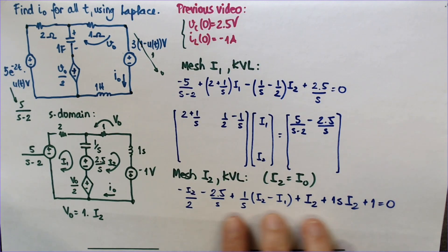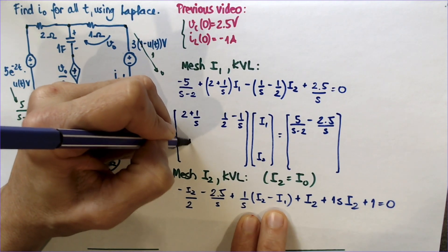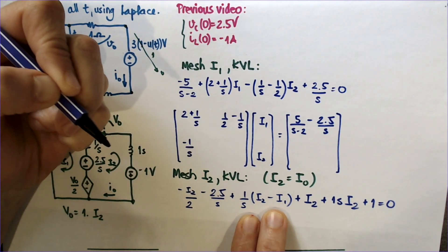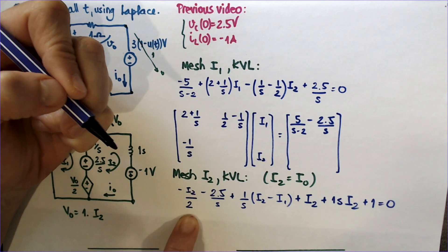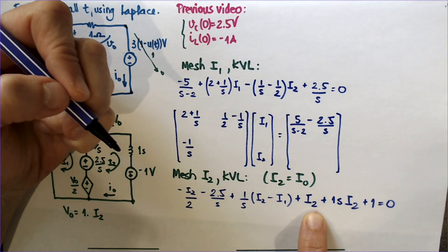Now really, I'm going to get all the I1's out, which are minus 1 over s. And then all the I2's out, which are minus half, plus 1 over s, plus 1.